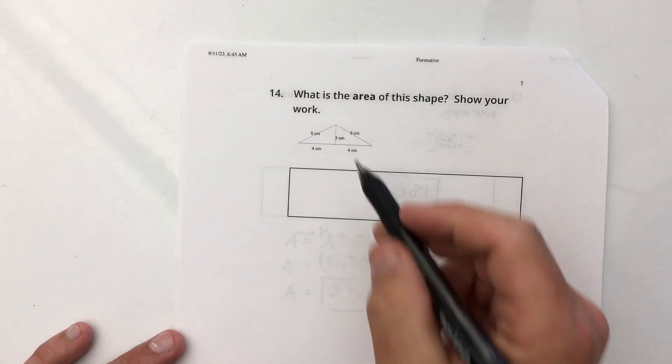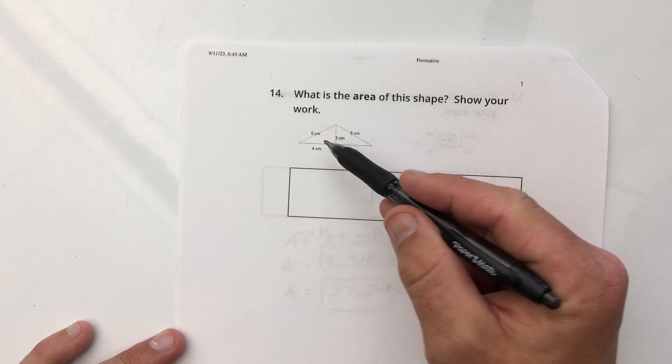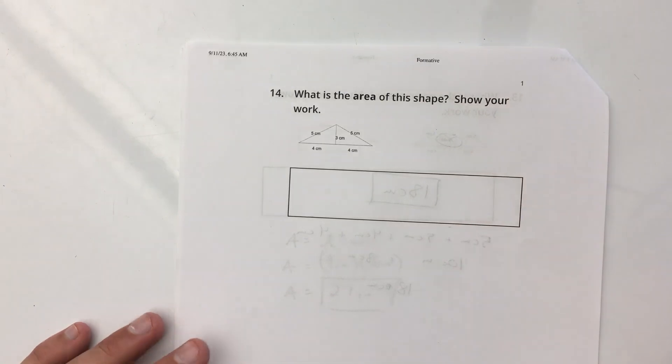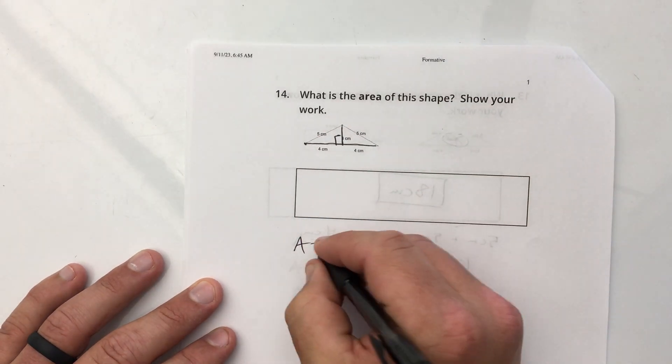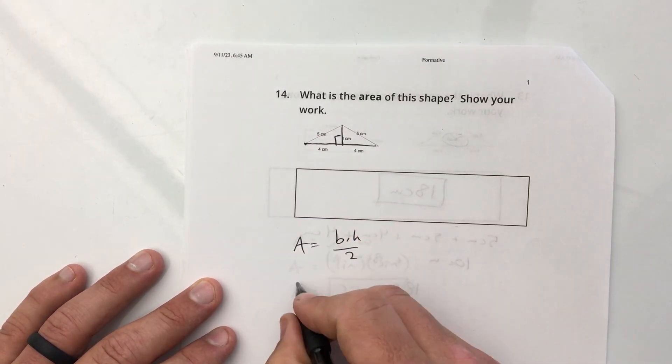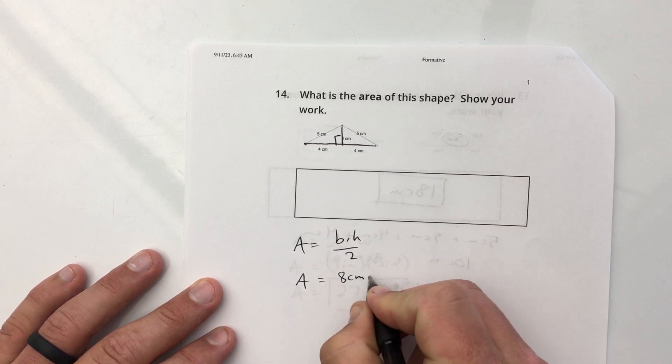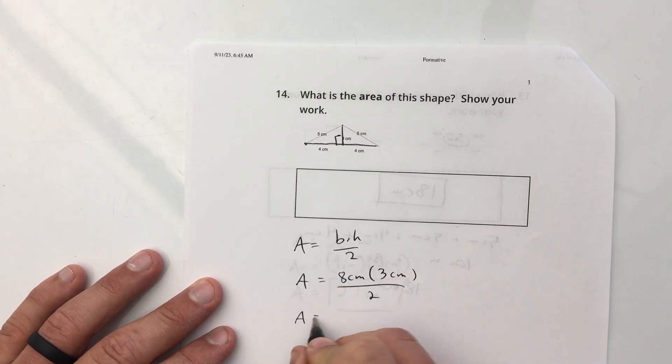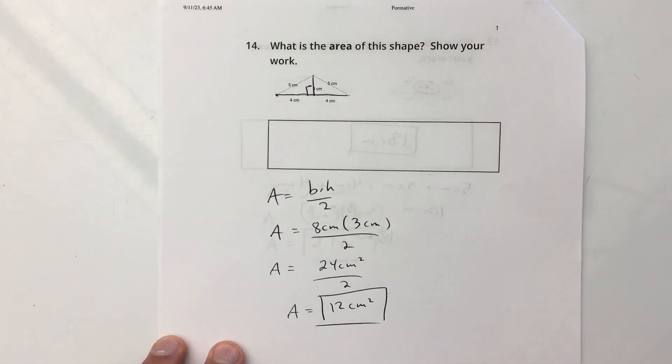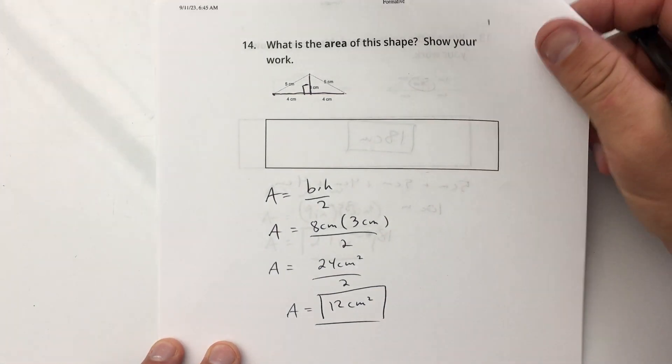Number 14, what is the area of this shape? This looks like two triangles. You might be tempted to do it in two triangles. I'm just going to do this in one. I'm going to say this entire thing is the base, right? And this 3 centimeters is the height. So the area equals base times height divided by 2. So area equals 8 centimeters times 3 centimeters, and we're going to divide that by 2. So that's 24 centimeters squared divided by 2. So the area is 12 centimeters squared. Don't forget to divide by 2. Somebody's going to do that.